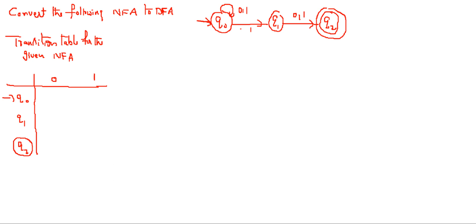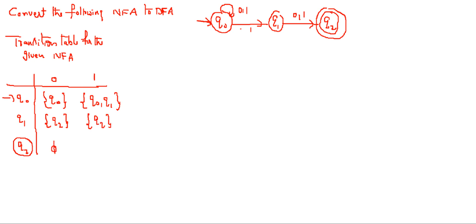Now we will see what happens when we apply inputs. If you apply 0 on Q0, you are going to Q0 only. If you apply 1 on Q0, you are going to either Q0 or Q1. If you see 0 on Q1, you are going to Q2. If you see 1 on Q1, you are going to Q2. If you see 0 on Q2, you don't have anything — it's the empty state. If you see 1 on Q2, you are not going anywhere, so it is also the empty state.